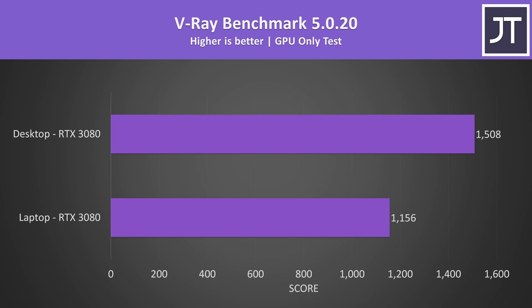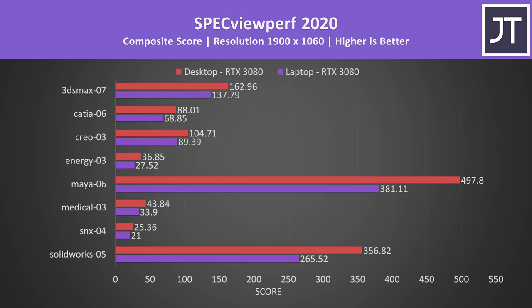The difference is a little larger in V-Ray, with the desktop 3080 scoring 30% higher than the laptop 3080, so not exactly scaling with the 42% higher CUDA core count found on the desktop card. Specviewperf tests out various professional 3D workloads. The desktop 3080 was always ahead of the laptop, but the margins could vary significantly depending on the specific test, so the desktop RTX 3080 was clearly better — surprising no one.